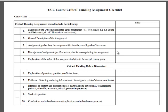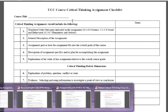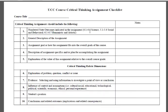I'm going to go through this and show you a couple of examples of what we're looking for. If you have this in front of you, it makes it a little bit easier. We have the numbered state outcomes, general description, assignment goal, description of assignment specifics, explanation of the value of the assignment relative to overall grade, and then the last five items here are actually the sections or the domains of the critical thinking rubric.